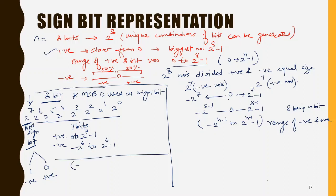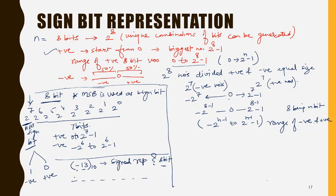If I want to convert minus 13 into a signed representation, in 8-bit representation, what I need to do is convert 13 using the 7 bits, and I will use the MSB — since it is minus, I will put the MSB as 1. For 8-bit, I will take these 8 places, and since it is a negative number, I place 1 at the MSB.